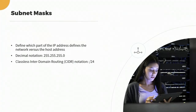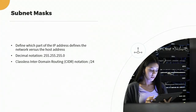You can also reference the subnet mask using CIDR notation — Classless Interdomain Routing. Instead of writing 255.255.255.0, you can say slash 24, meaning 24 bits are set to 1 starting from the left. Three octets times 8 bits equals 24. That's IPv4.